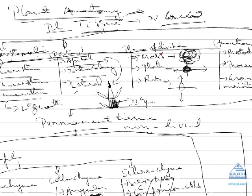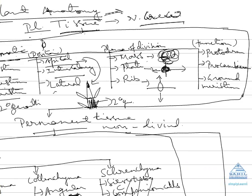Classification based on plane of division: first is mass meristem, which divides in all directions leading to the formation of a clump or mass of cells. Second is plate meristem, where longitudinal cuts cause growth in the horizontal plane. Third is rib meristem, where transverse cuts result in columnar growth in the vertical plane. Rib meristem is also known as file meristem.